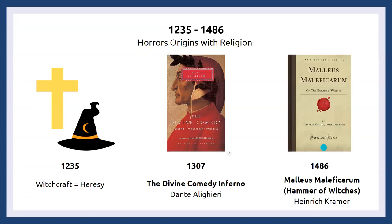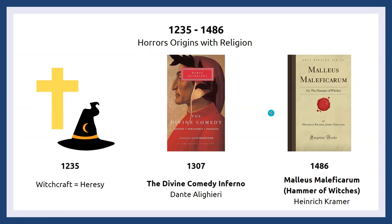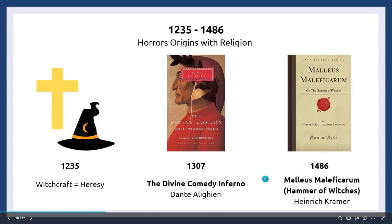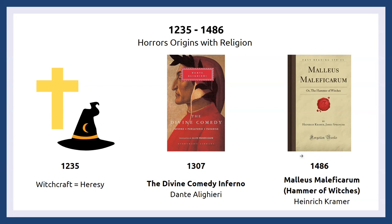In 1307, our first major horror fiction release: Dante published the first volume of The Divine Comedy, also known as Inferno. The vision of Satan that Dante presented would be very influential in years to come. Over the next century, works of horror would still largely be tied to religion. In 1486, Henry Cramer and Jacob Springer published The Hammer of Witches, which certainly contributed to the witch craze that continued to grip the next two centuries.